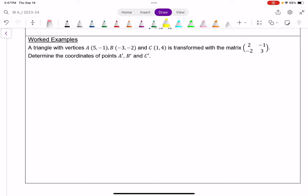I got a triangle with these three vertices. And so let's just right now express this as a matrix. The coordinates of A are 5, negative 1. So 5 over negative 1, negative 3 over negative 2 for B, and 1 over 4 for C. And so this 2 by 3 matrix represents the coordinates of A, B, and C.